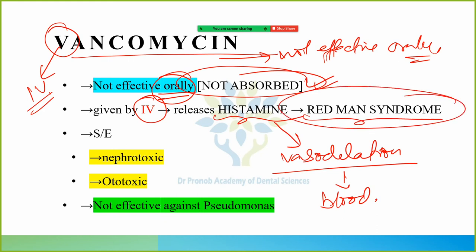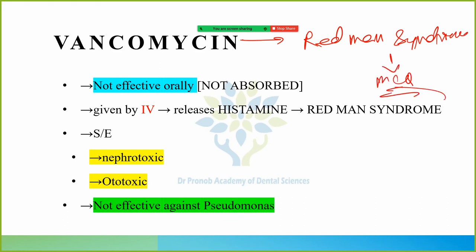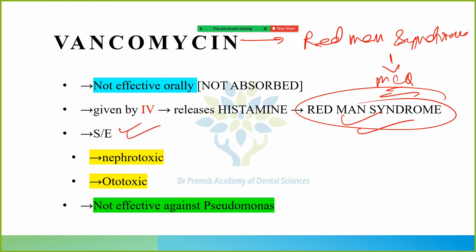Because of vasodilation and increased blood flow, vancomycin causes Red Man syndrome — the person appears red. That is the side effect of vancomycin: Red Man syndrome. This is an MCQ and NEET question — remember it well. Additional side effects of vancomycin are nephrotoxicity (kidney problems) and ototoxicity (ear/middle ear effects).